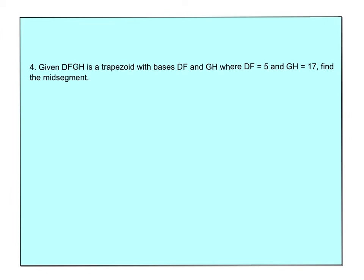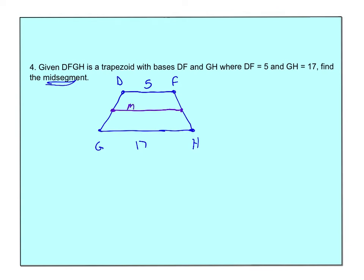Do we have a trapezoid DFGH? Let's sketch this: DF is 5, GH is 17. They want to know the mid-segment. The mid-segment is exactly halfway in between, so M equals the two bases divided by 2: that's (5 + 17) / 2 = 22 / 2 = 11. All I have to realize is it's base plus base divided by 2.